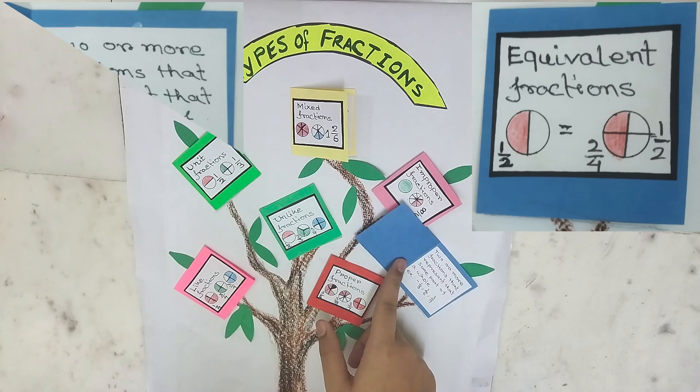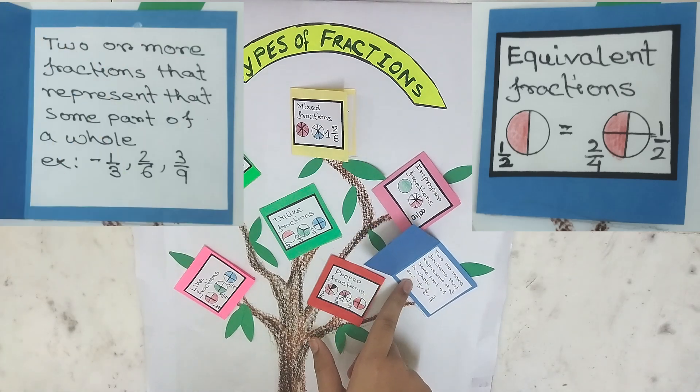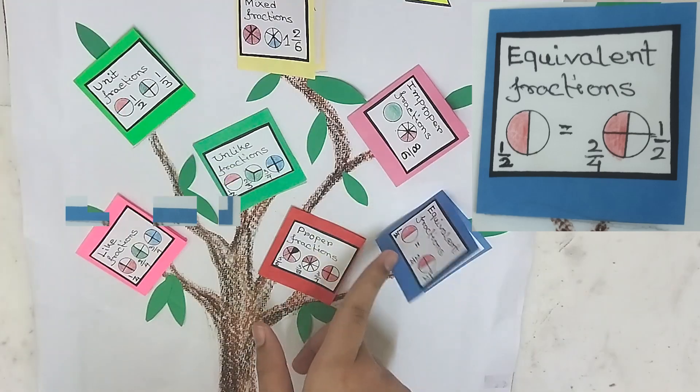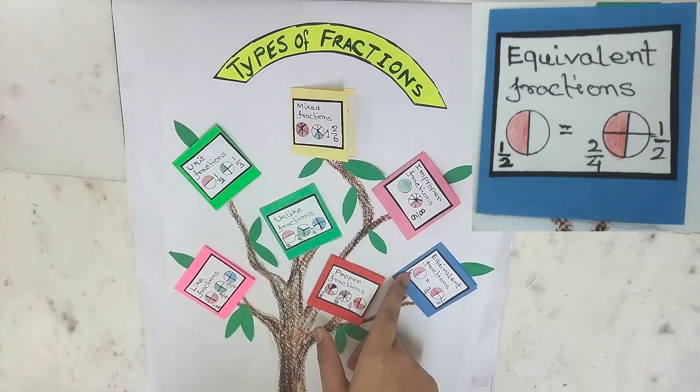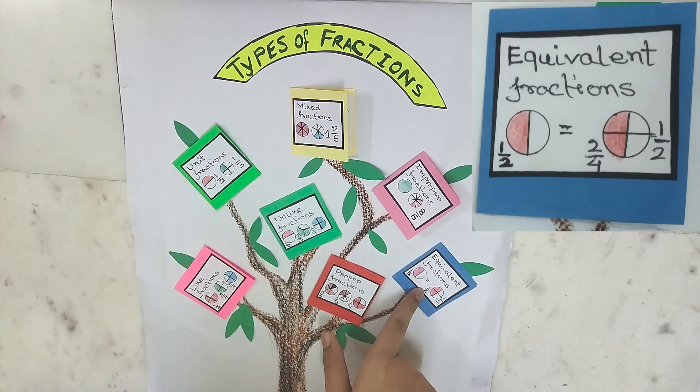Equivalent fractions. Two or more fractions that represent the same part of a whole. Example: one by three, two by six, three by nine. And here we have one by two equals two by four.